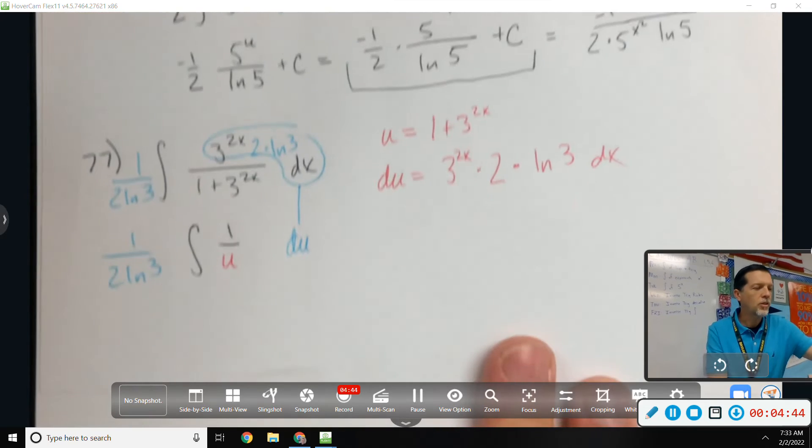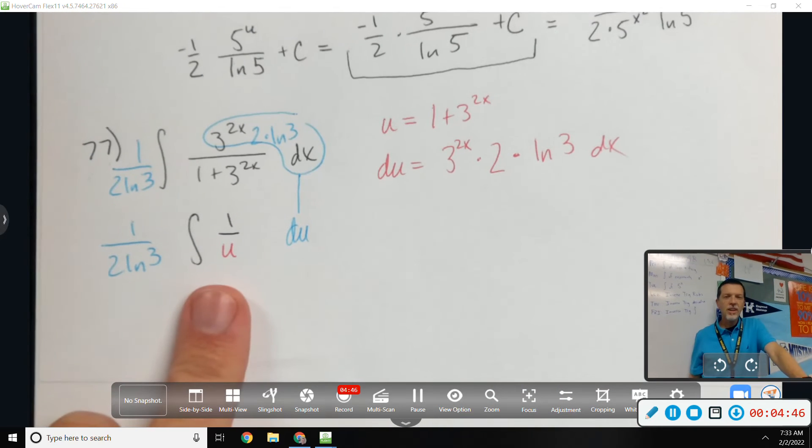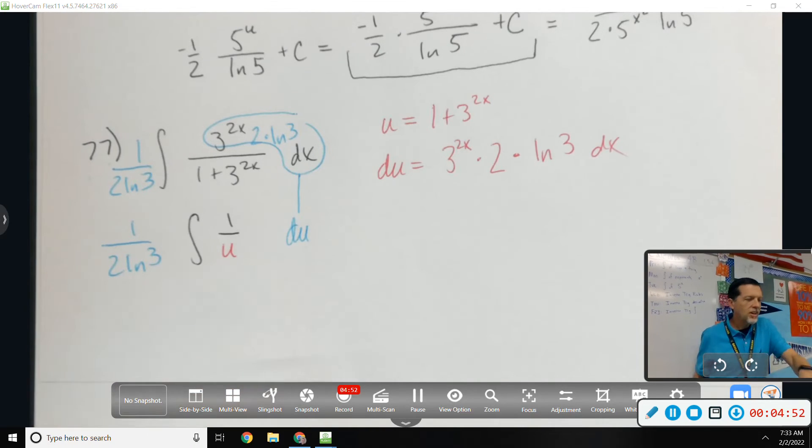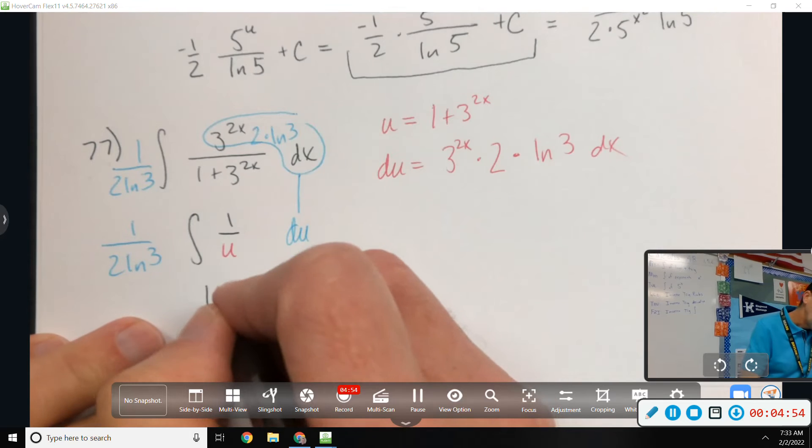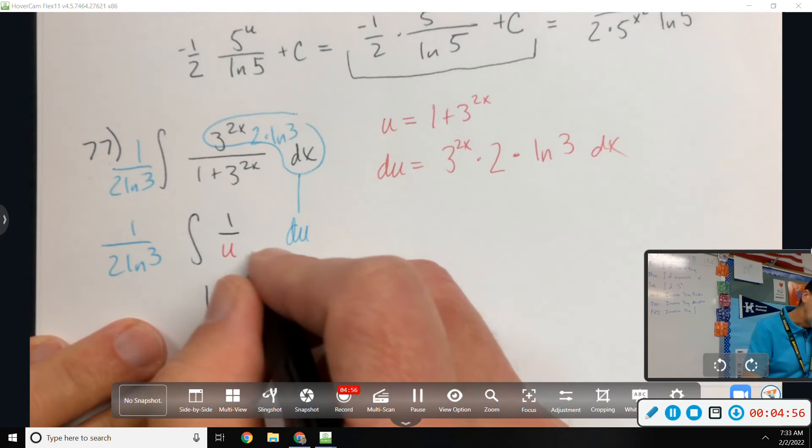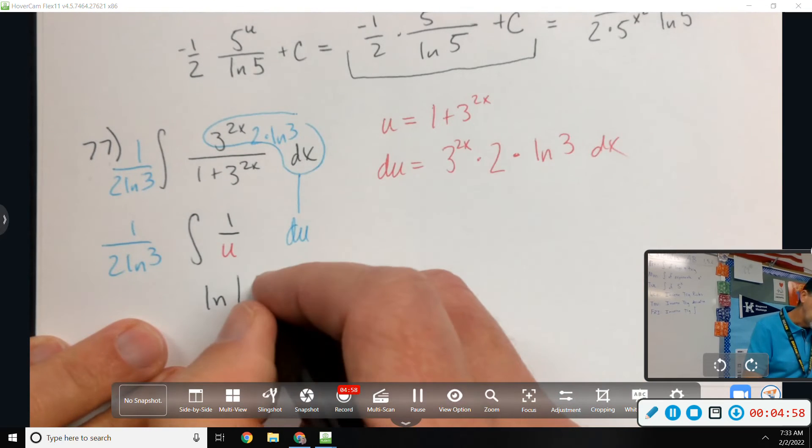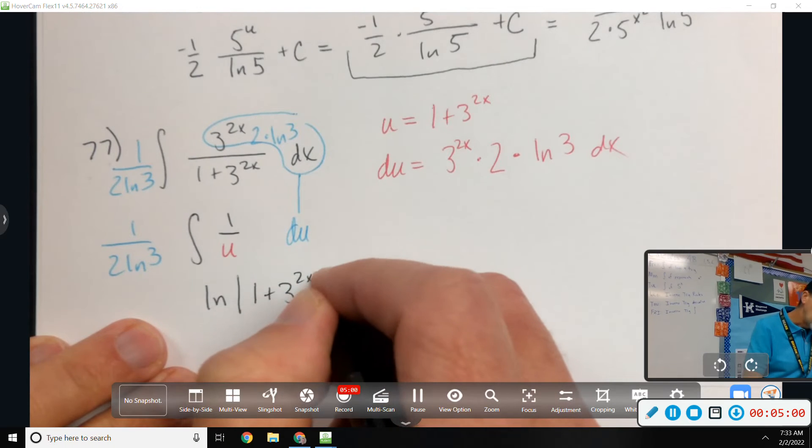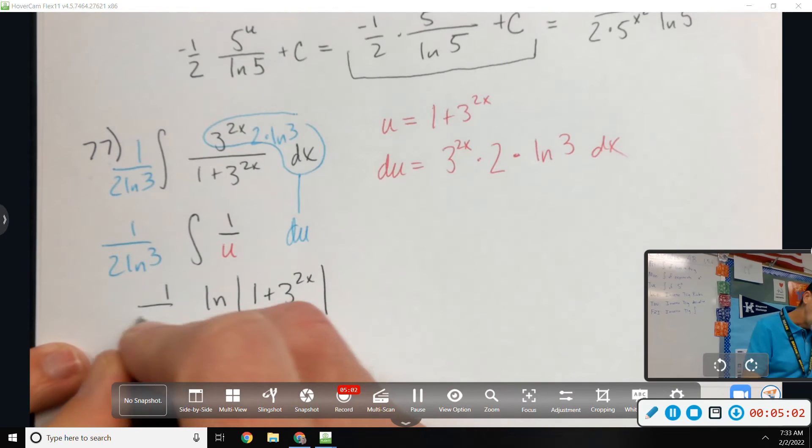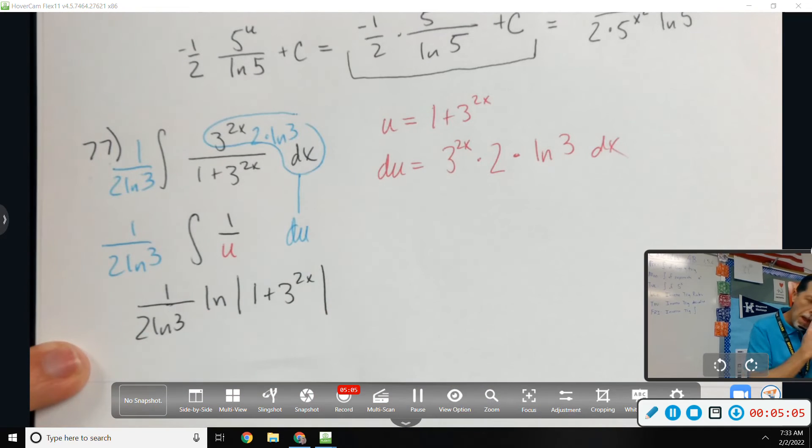So all of that numerator is du, and the denominator we picked was u. That's a good review question right there. What's the antiderivative of 1 over u du? Natural log. So natural log of the absolute value of u. I'm going to go ahead and plug u in. Plus c.